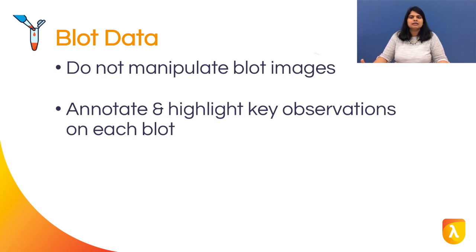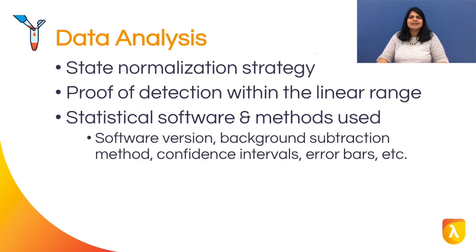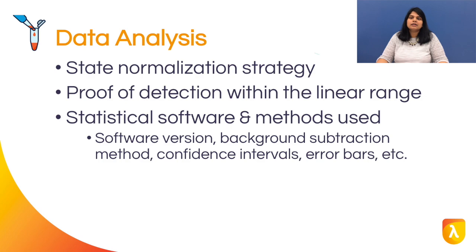The bottom line is the data matters and not how pretty they appear. Clearly identify the normalization strategy used, with associated details such as normalization control used, standard deviations, and percent coefficient of variance. Provide proof that you are detecting within the combined linear range of both the target and the normalizing internal loading control, which could be a housekeeping protein or total protein.